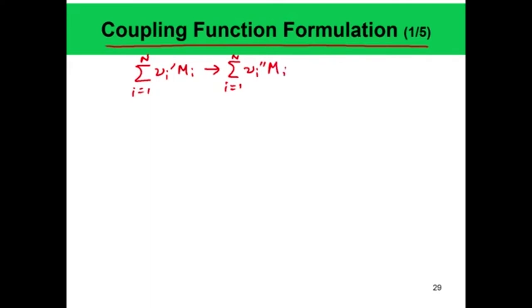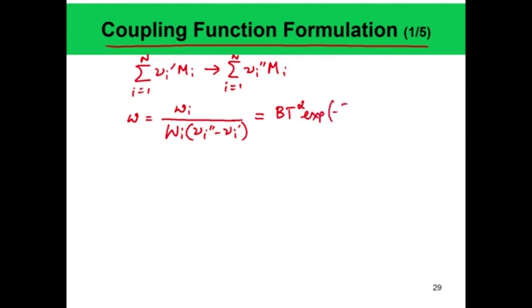The species-independent reaction rate omega is given by the species consumption rate w_i divided by the molecular weight W_i times (nu_i'' minus nu_i'). If you have any confusion with this formulation, you can go back to the chemical kinetics class. This quantity is B times T to the power alpha times exponential of minus E_a over R_0 T — this part is the reaction rate constant k — times the law of mass action, which depends on the product of species concentrations.